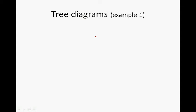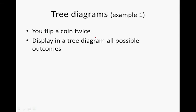Here is an example of tree diagrams. You flip a coin twice. The question is: display in a tree diagram all possible outcomes. The key word here is 'tree diagram,' so we'll have to draw a tree diagram to display what will happen when we flip a coin twice.